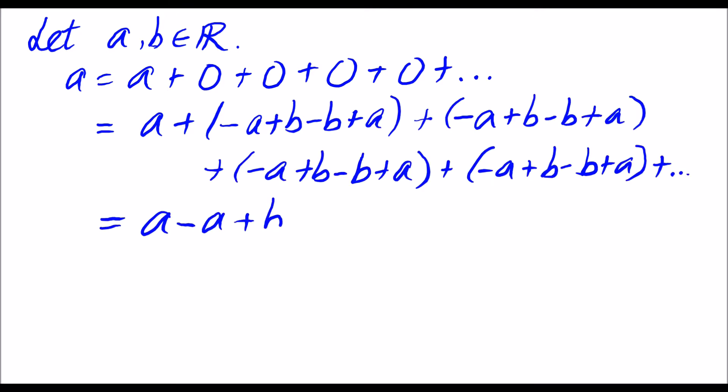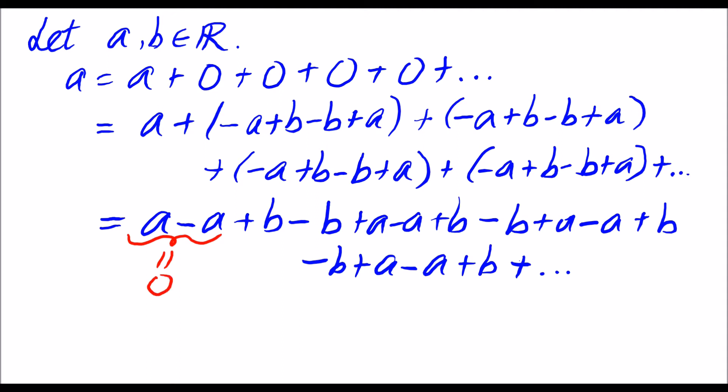Now we have a minus a plus b minus b plus a minus a plus b... For the first pair, it is equal to zero. We leave the b alone.